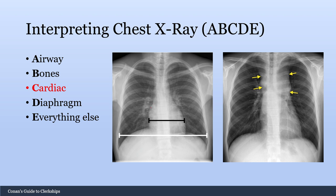C is for cardiac. One of the main assessments here is the cardiothoracic ratio for cardiomegaly, which is defined as a cardiothoracic ratio greater than 50%. You can also check for mediastinal widening, which is concerning for something such as aortic dissection. Notable anatomical landmarks include the aortic knob, which represents the aortic arch, and the right atrium border.